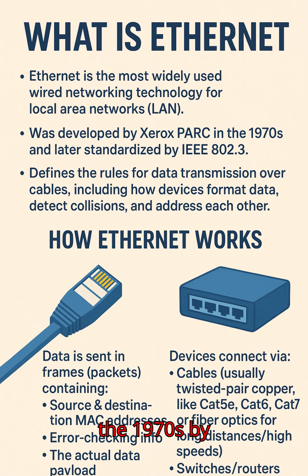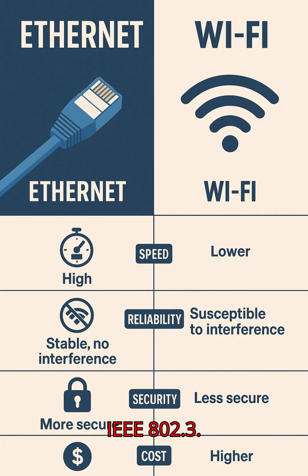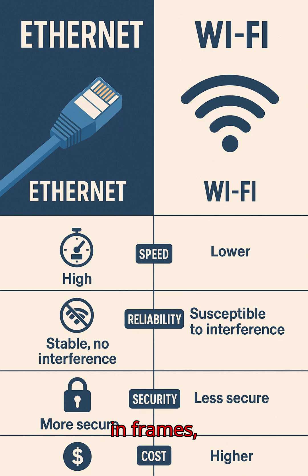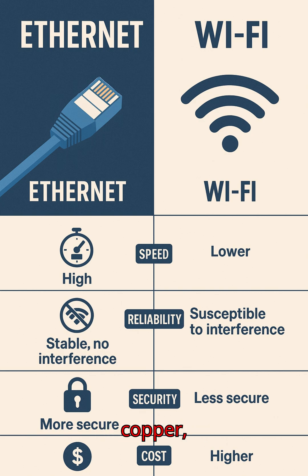Ethernet was developed in the 1970s by Xerox, later standardized by IEEE as IEEE 802.3. It works by sending data in frames and packets over cables.